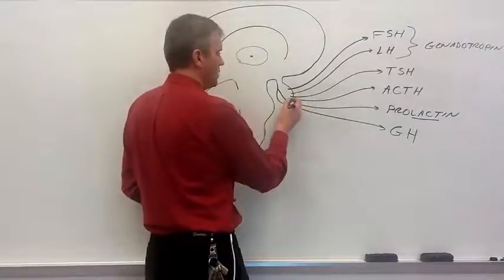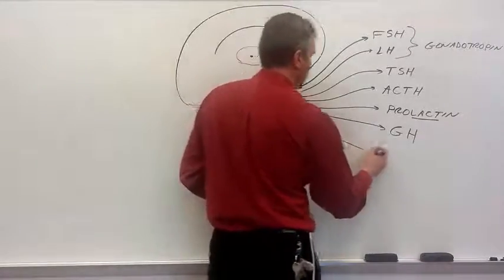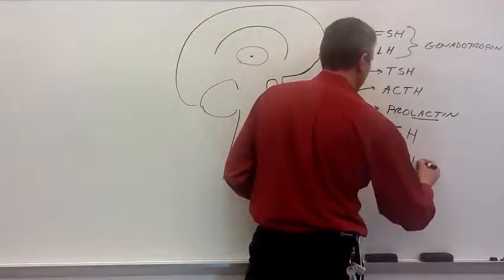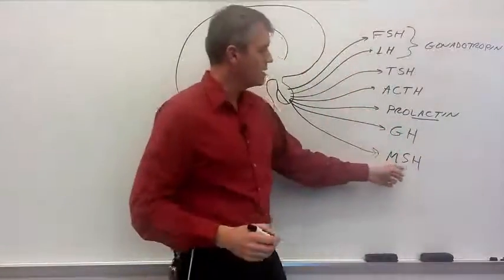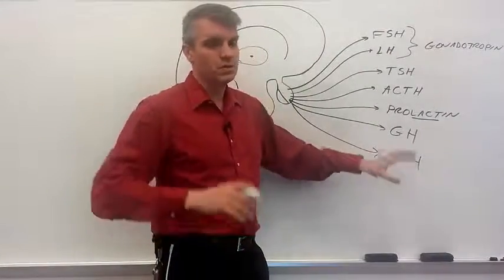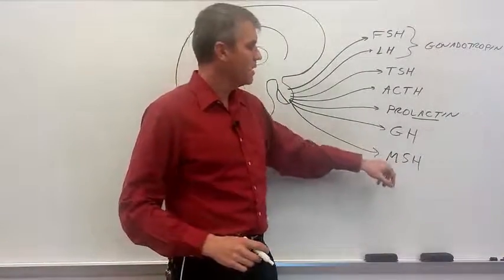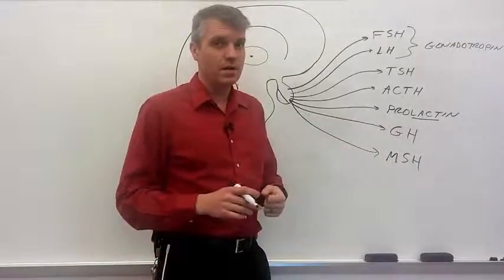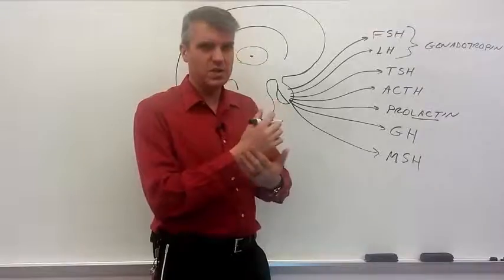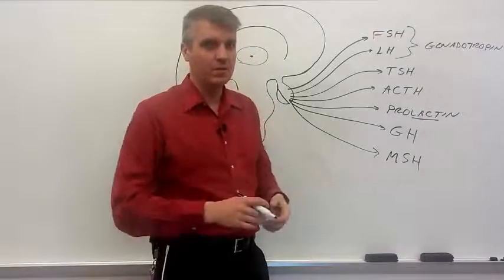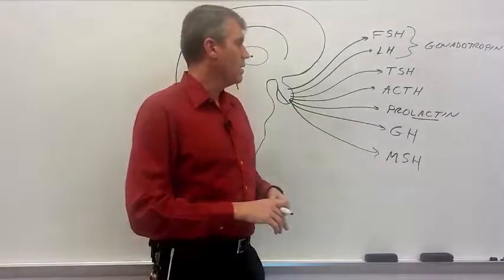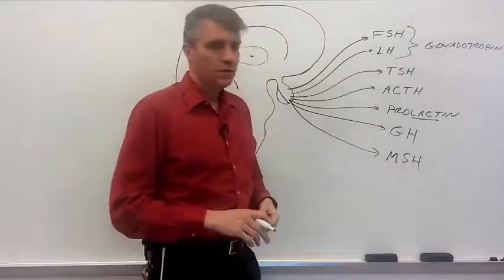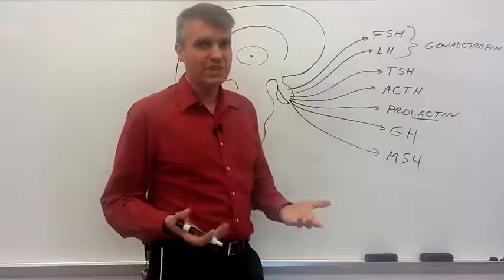The last one that I will talk about for the anterior pituitary gland is a hormone called MSH. Melanocyte-stimulating hormone. This one also tells you exactly what it does. It stimulates melanocytes. Melanocytes are the cells, for example, in our skin that make pigment molecules, melanin. So an increase in this hormone would cause an increase in pigmentation.